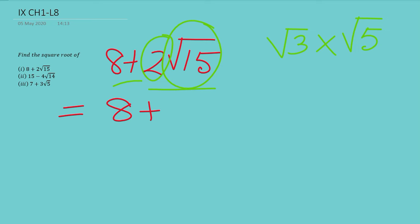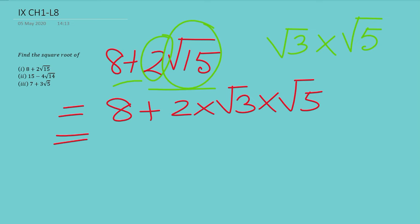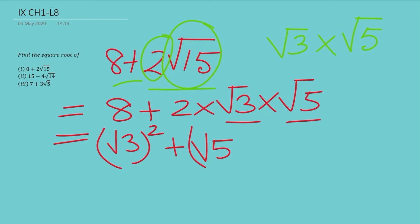So at this place we can write it as 8 + 2 × root 3 × root 5. Then you can see that if we square root 3 and root 5, they become 3 and 5, and 3 + 5 equals 8. So instead of writing 8 we write (root 3)² + (root 5)²  — because (root 3)² = 3, (root 5)² = 5, and 3 + 5 = 8.